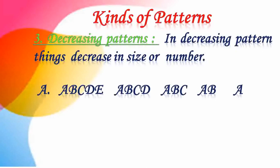Now comes the third: decreasing pattern. In a decreasing pattern, things decrease in size or number. See the example: A, B, C, D — then the pattern decreases to A, B, C — three alphabets, then two alphabets, then one alphabet. Started with four or five alphabets, we get at last one alphabet. It is in decreasing manner — from bigger to smaller.